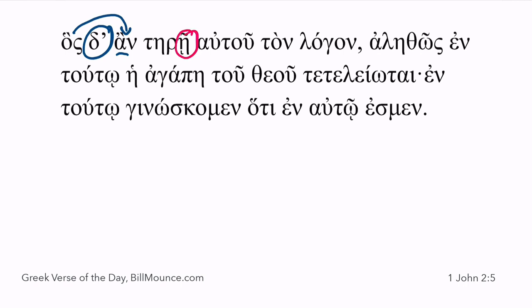In first-year Greek we teach that when you hit the subjunctive, you just use 'may' or 'might,' and that's a good technique for first year. But there are times in which it's not necessary. It's better English anyway to say 'for whoever keeps his word,' not 'whoever might keep,' but 'whoever keeps his word.' It's the same idea, and it's a little better English.